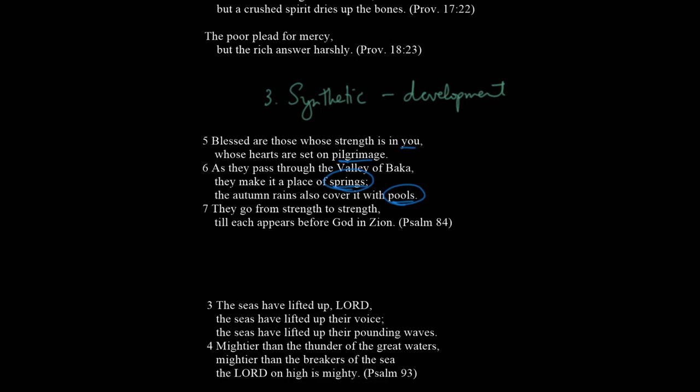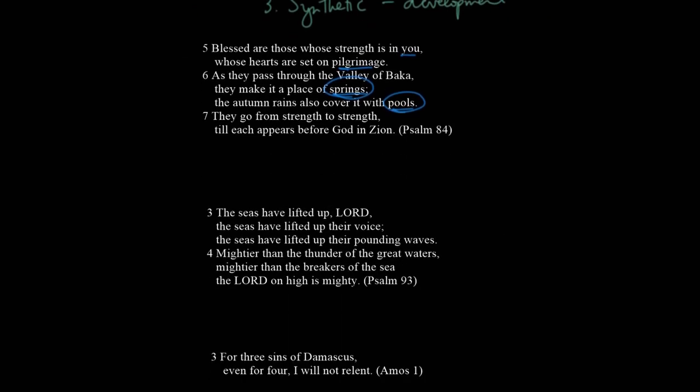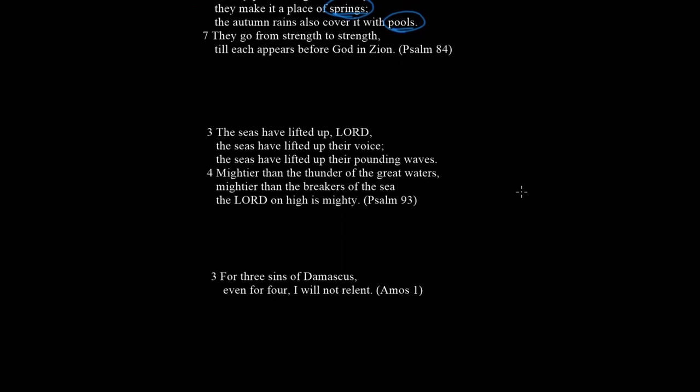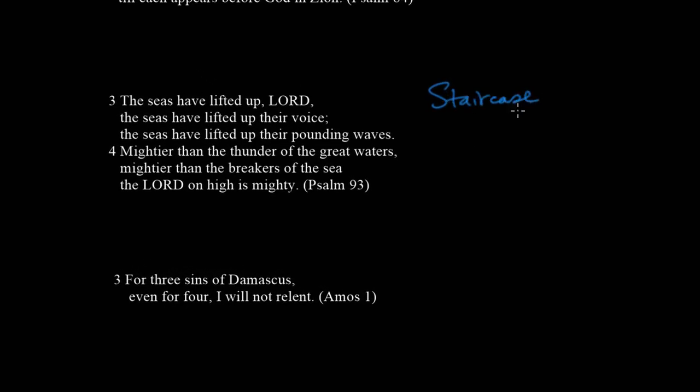There are a couple of types of synthetic parallelism worth noting. One is staircase parallelism, also referred to as climactic parallelism. The basic idea is a kind of crescendo going up the stairs — things get added on top of each other. It fits perfectly for Psalm 93, where the power of the sea is described: 'The seas have lifted up, Lord, the seas have lifted up their voice, the seas have lifted up their pounding waves.' It's a great example of staircase repetition, which Loth argued was a type of synthetic parallelism.